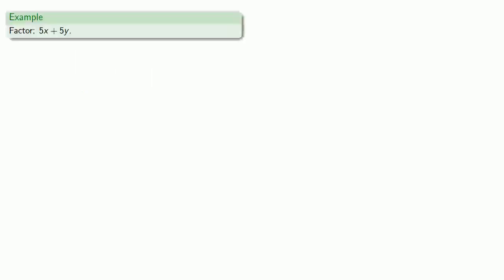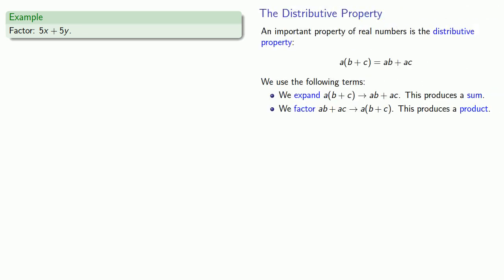Let's try to factor 5X plus 5Y. Both factoring and expanding are based on the distributive property, so let's bring that back. Factoring starts with the sum and removes, outside a set of parentheses, a factor that is common to all terms of the sum. It helps to read out what these two terms are. The first term is 5 times X, and the second term is 5 times Y.